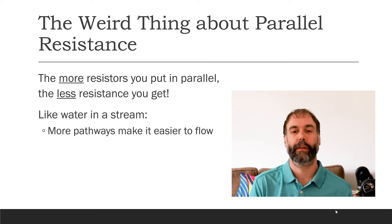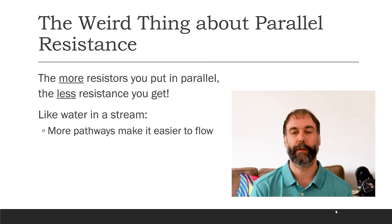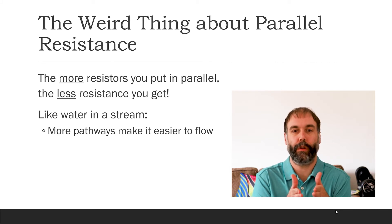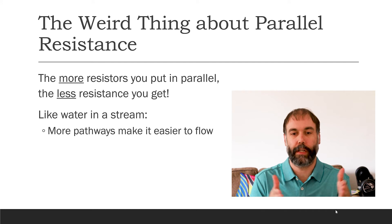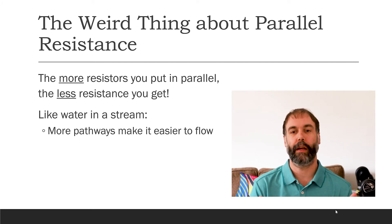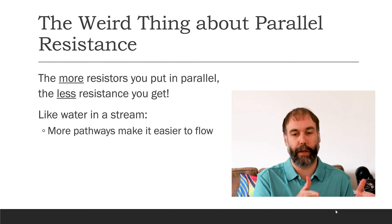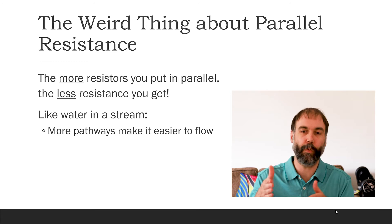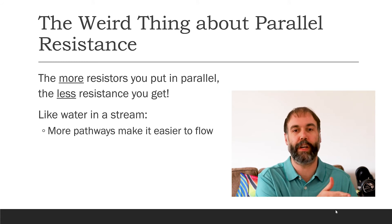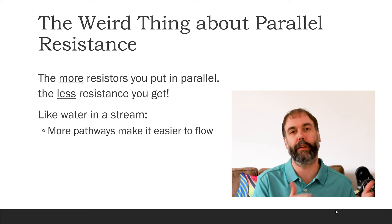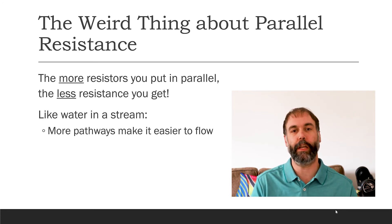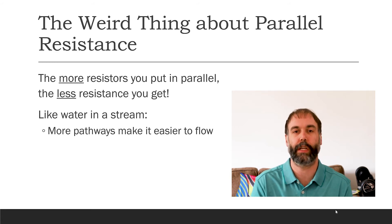Imagine that the electricity flowing through your circuit is like water flowing through a stream. If all of that water has to go through one narrow little section, it's going to have a hard time flowing. But now imagine that there's an earthquake and suddenly another gap opens up right next to the first one — now the water has two different ways that it can travel, so some of it can go down the original path and another portion can go down this new path.